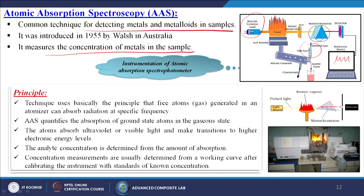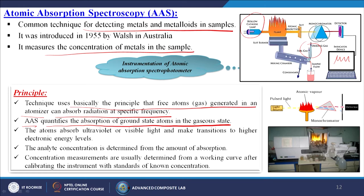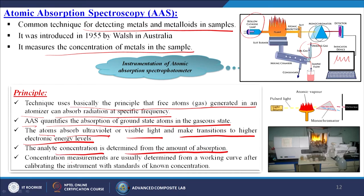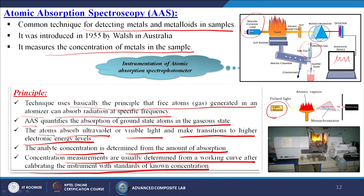Principle of AAS: the technique uses the principle that free atoms generated in an atomizer can absorb radiation at specific frequencies. AAS quantifies the absorption of ground state atoms in the gaseous state. The atoms absorb ultraviolet or visible light and make transitions to higher electronic energy levels. The analyte concentration is determined from the amount of absorption. Concentration measurements are usually determined from a working curve after calibrating the instrument with standards of known concentrations. The instrument generally has a pulsed light source, then atomic vapour, then monochromator and detector.